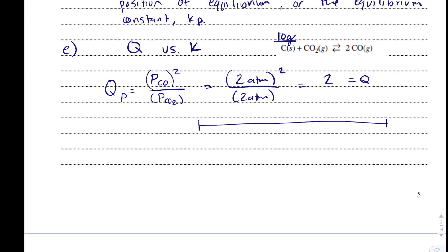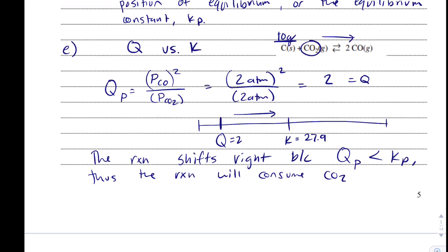I'm going to draw a number line. We know K from above is 27.9. So, Q is over here at 2 and so it looks like I'm going to shift right. So, the reaction shifts right because QP is less than KP and thus, the reaction will consume CO2 because CO2 is a reactant and we're going to decrease the partial pressure of the CO2 gas.